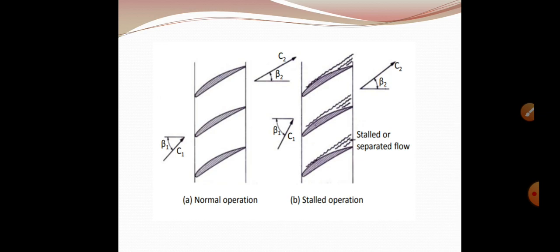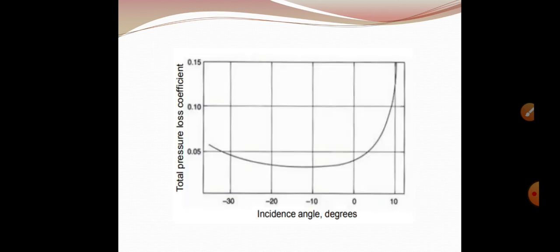Here we can see normal operation and stalled operation, and a graph which represents total pressure loss coefficient to incidence angle. The value of the size pressure to see actual degrees can be seen in this particular manner.